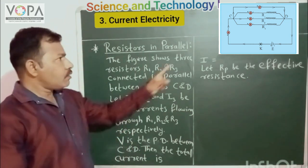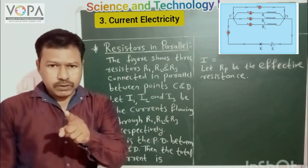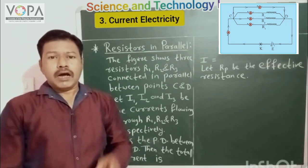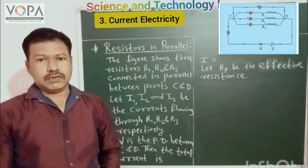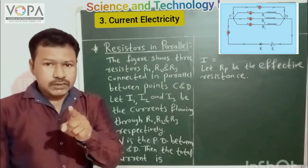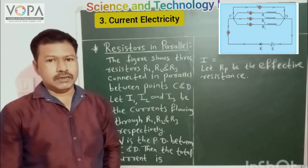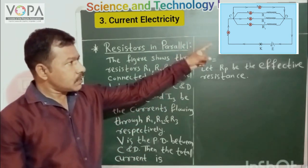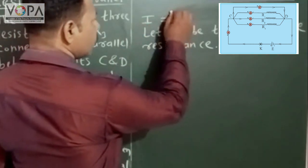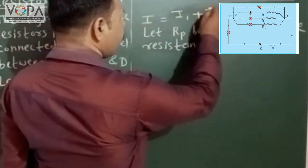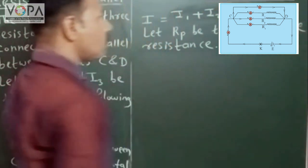Let I1 be the current going through the resistor R1, I2 be the current going through the resistor R2, and I3 be the current going through the resistor R3. V is the potential difference between points C and D. Then the total electric current going through the circuit is I = I1 + I2 + I3. This is equation number 1.